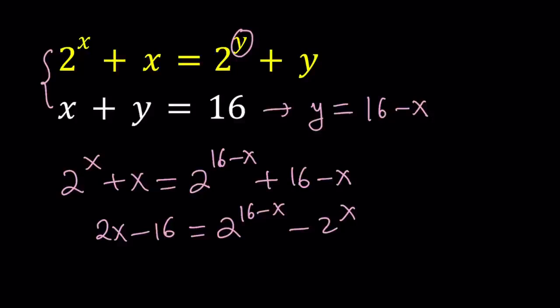So, we're going to use a different approach and here's what we're going to do. We're going to focus on the first equation first because that's more complicated. And we have the same type of structure on both sides. We have 2 to the power something plus something. And then on the right-hand side, the same thing, right? Pretty much. The variables are different.